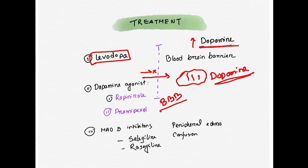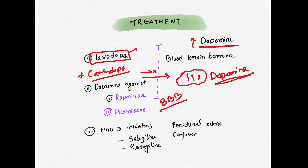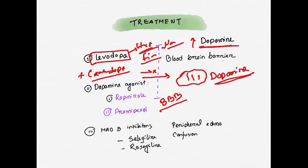If we use dopamine directly, it cannot cross the blood-brain barrier. So instead, we use Levodopa, which can cross the blood-brain barrier and is converted to dopamine in the brain. This gives a dramatic improvement in Parkinson's disease. However, Levodopa is normally given in combination with Carbidopa to reduce side effects such as hypertension, cardiac fibrillation, and nausea. The Levodopa and Carbidopa combination is the most effective treatment.